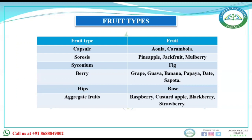For rose — along with raspberry, custard apple, blackberry, and strawberry — it is an aggregate fruit, and the fruit type is hips. The question was about rose, so the answer is hips. The detailed characteristics of these fruit types have been discussed in our pre-recorded lectures available on our website.